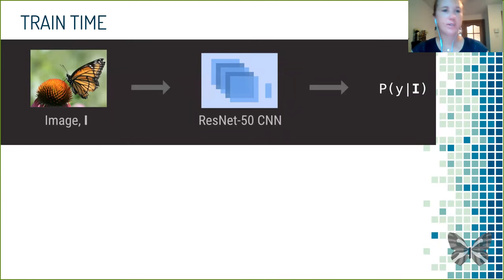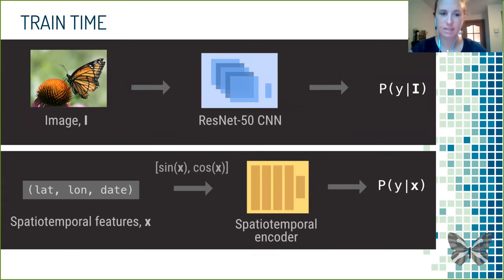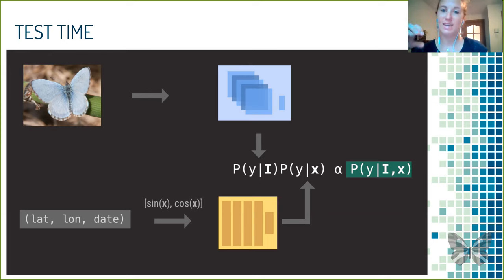At train time, we take an image of a butterfly, run it through our 50-layer ResNet, and get a probability — for example, the probability that this is a monarch given this image. Then we take the latitude, longitude, date and time, transform them using the sine and cosine transformation, run them through a simple neural network to make the spatio-temporal encoding, and get another probability: the probability of this being a monarch given the coordinates and date. At test time, we multiply these two probabilities together and pick the most probable species.